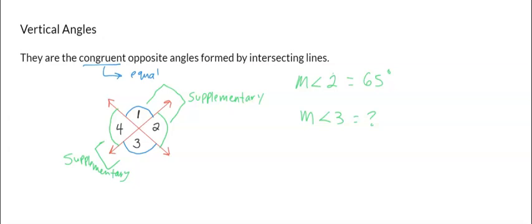Okay, so what do we do? Since we know that angle one and two are supplementary, meaning they have to equal 180 degrees together, their sum, what I have to do now is...